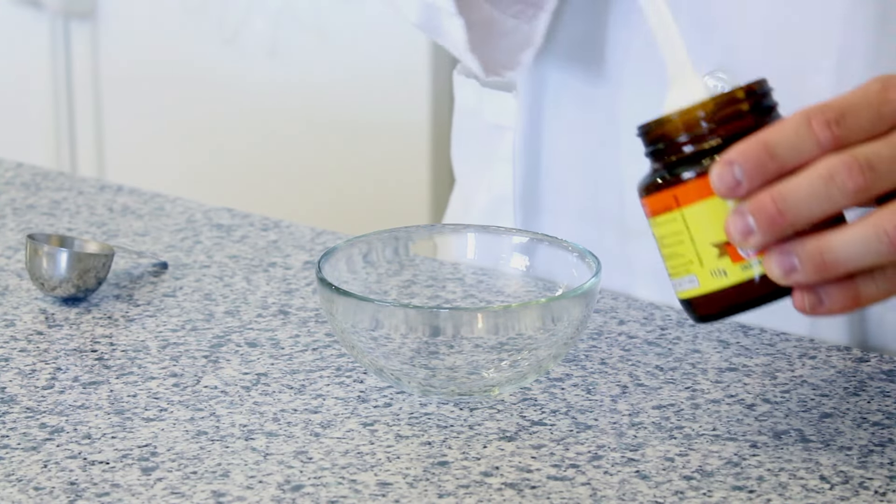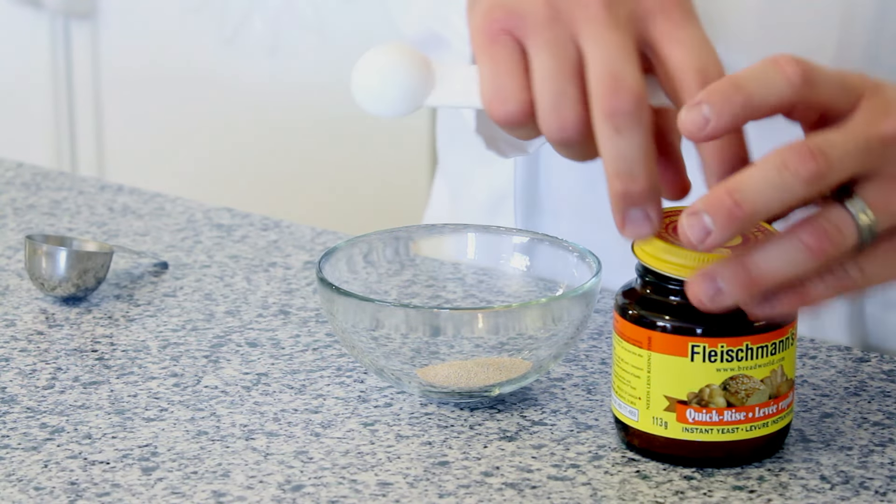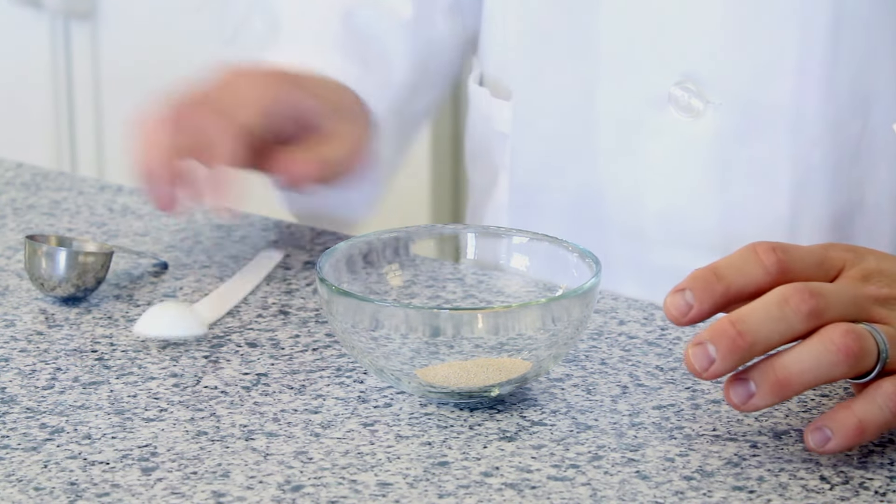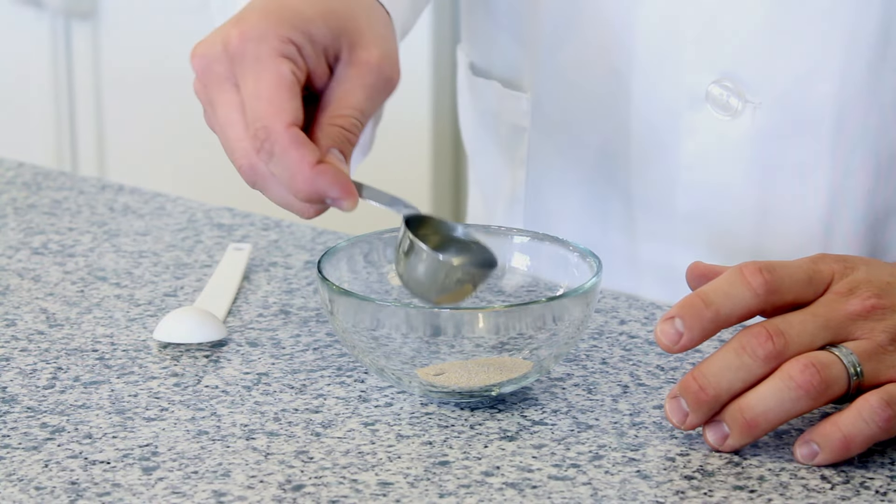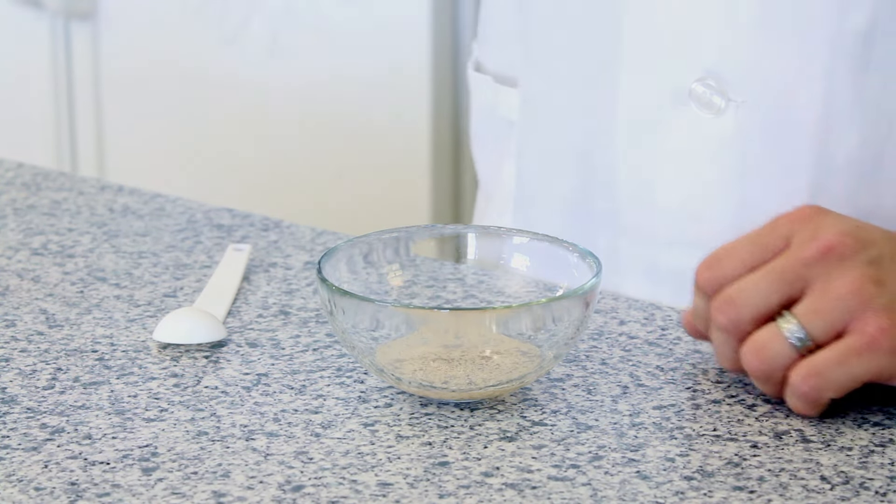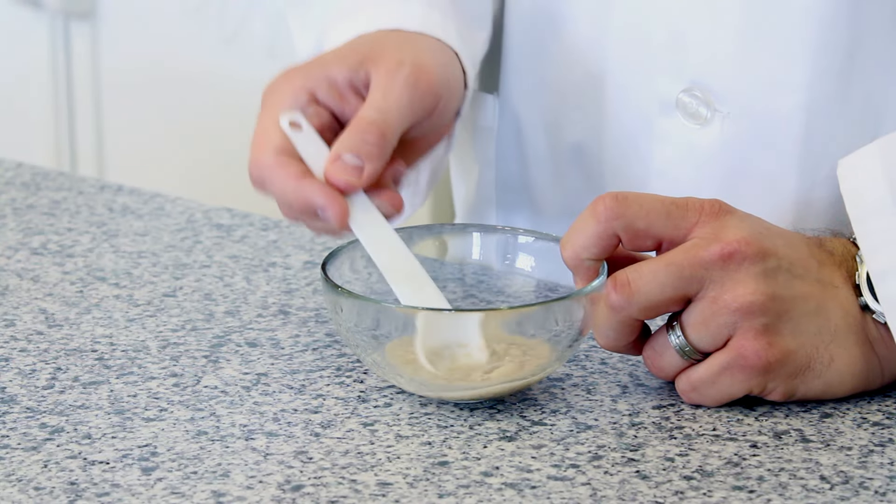The first step in our experiment will be to dissolve the yeast in some warm water. All we're going to do is take 1 teaspoon of our dry yeast, put it in a mixing bowl, and to that we're going to add 2 tablespoons of very warm water. And then we just mix until it's completely dissolved.